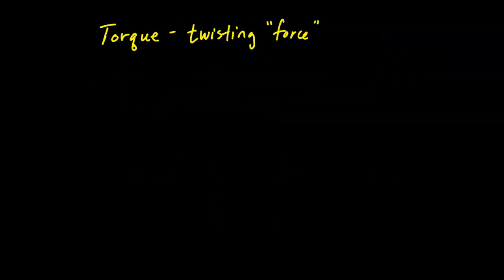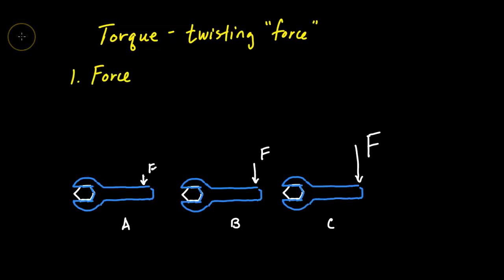Torque can be thought of as a twisting force — though force is in quotes because torque is not actually measured in newtons like a force is. Torque depends on three things. The first is the magnitude of the force: the greater the force applied, the greater the torque. In a wrench example, the arrow size represents force, so C with the greatest force produces the greatest torque, while A with the least force produces the least torque.